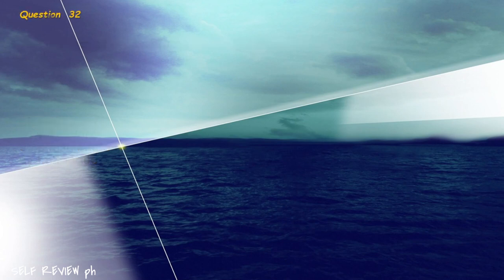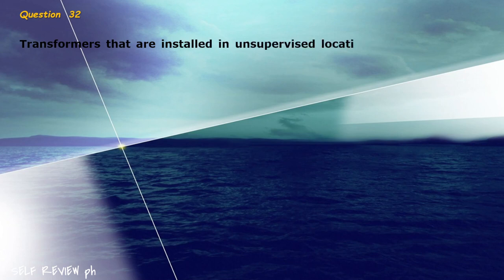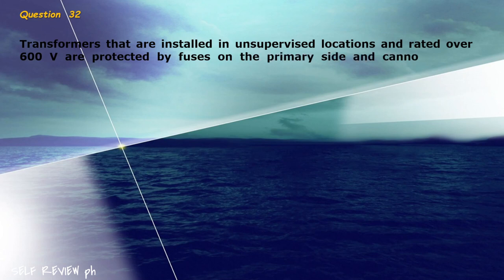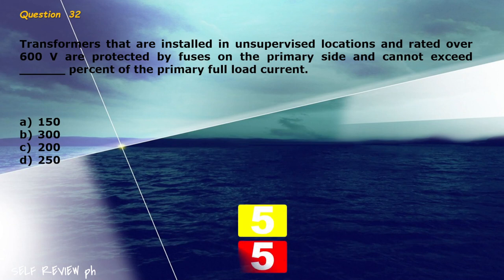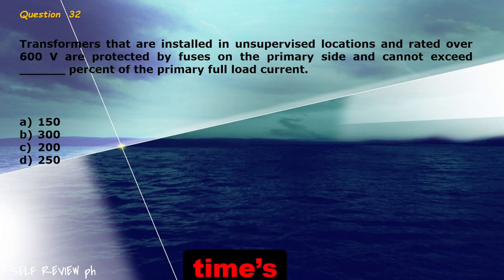Question 32: Transformers that are installed in unsupervised locations and rated over 600 volts are protected by fuses on the primary side and cannot exceed blank percent of the primary full load current. A) 150, B) 300, C) 200, D) 250. The correct answer is letter B, 300.